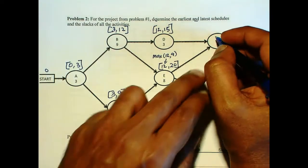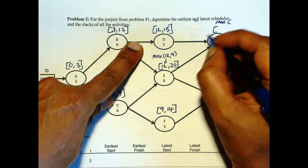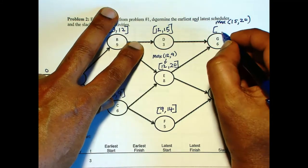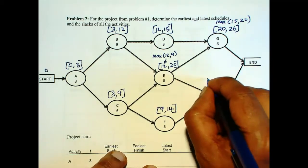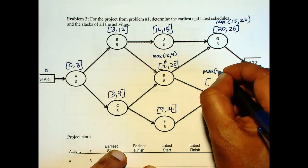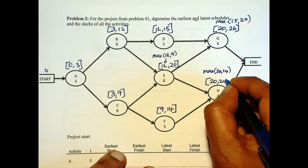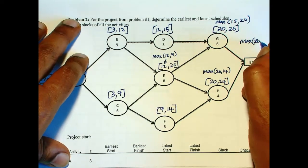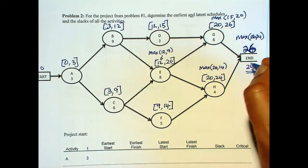Here, there are two arrows coming in. So we do max of 15 and 20. So that will give us 20 plus 6 is 26. Here, again, there are two arrows. So we have max between 20 and 14. So that gives us 20 plus 4 is 24. And the finish has two arrows. So 26 and 24 is 26. So we start with 26.